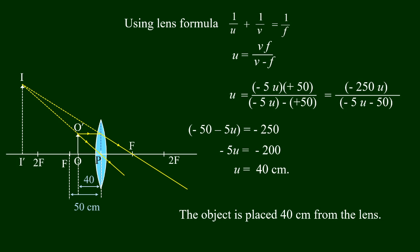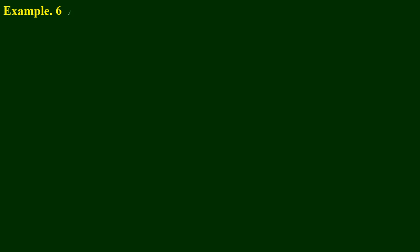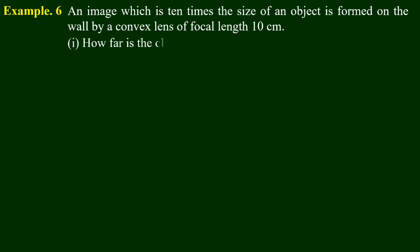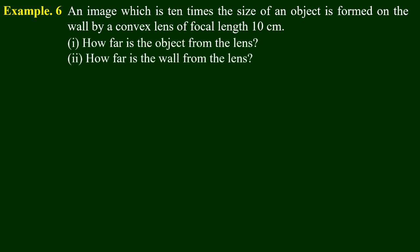The object is placed 40 cm from the lens. An image 10 times the size of an object is formed on the wall by a convex lens of focal length 1. How far is the object from the lens?